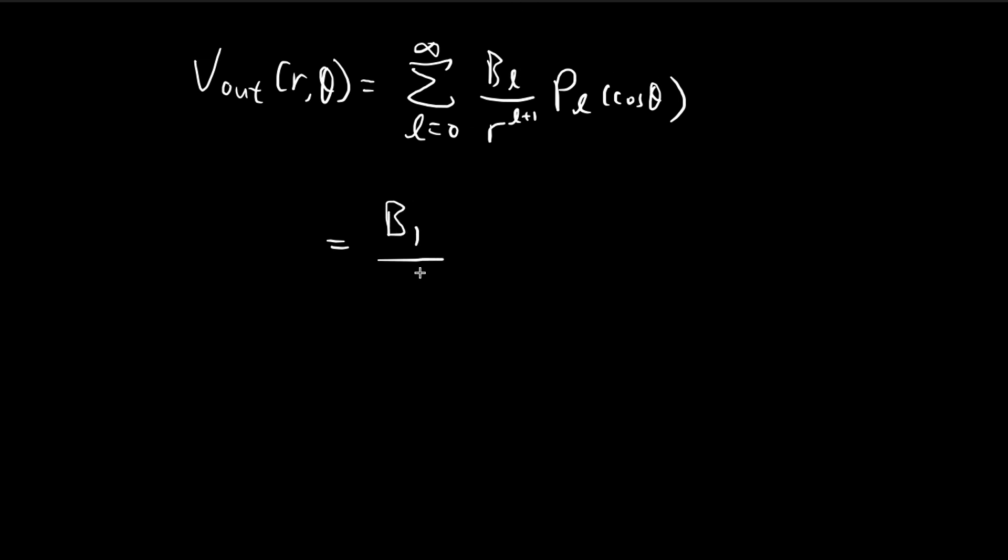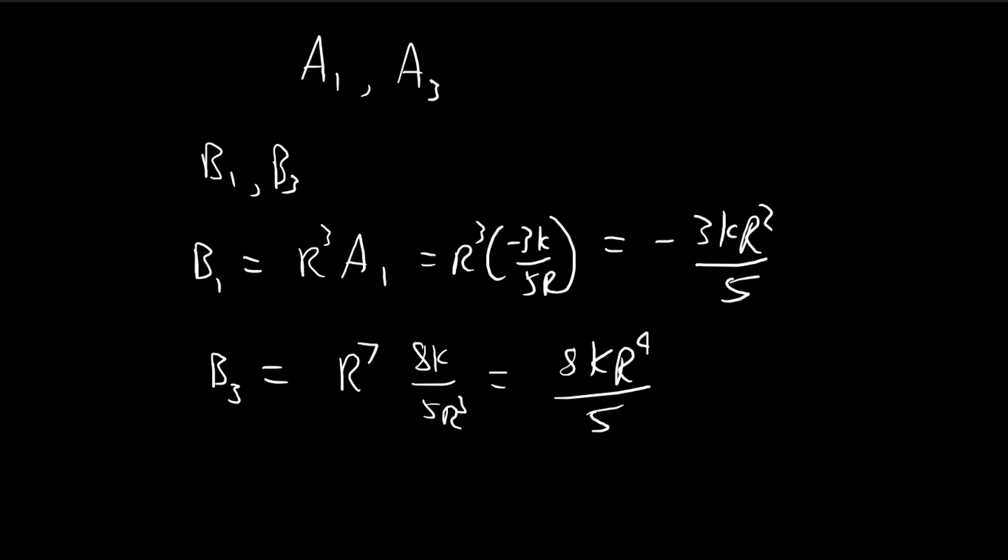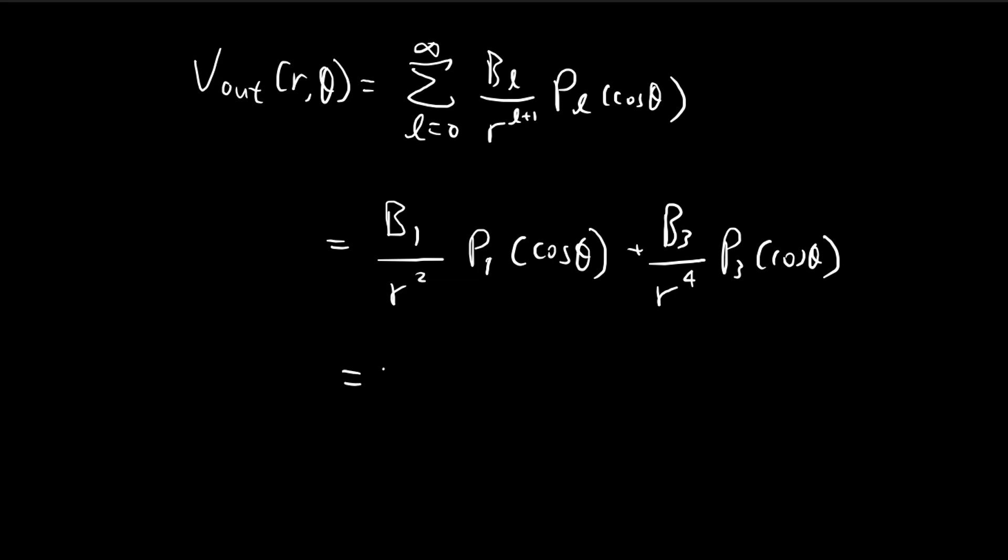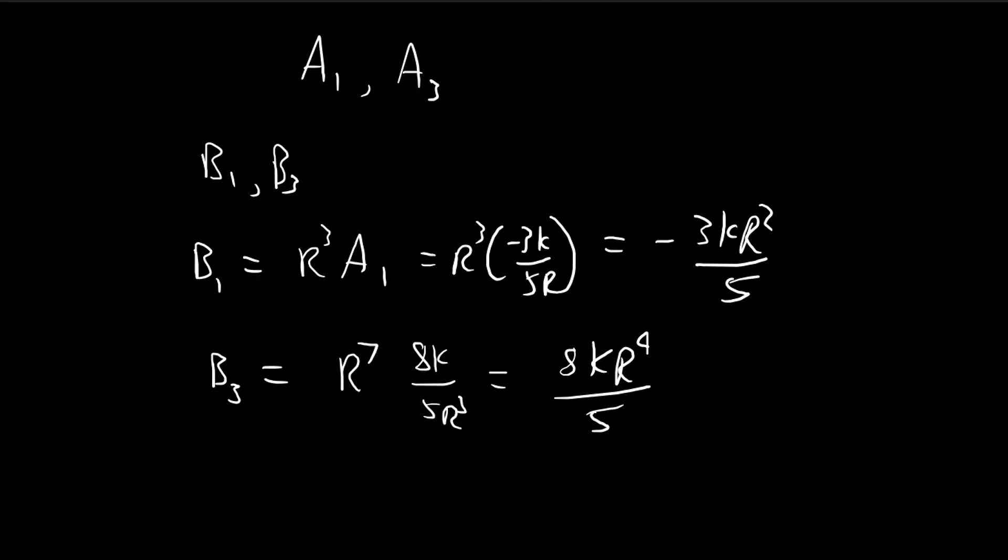So we have B1 over R to the power of 2 times P1 cosine of theta. And then we also have B3 over R to the power of 4 times P3 cosine of theta. So B1 is equal to negative 3k R squared divided by 5.